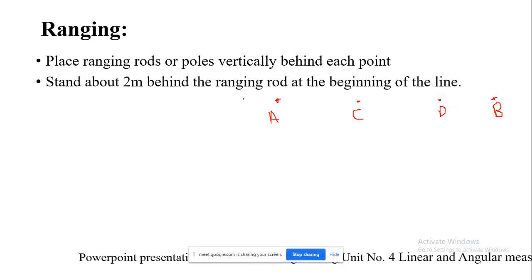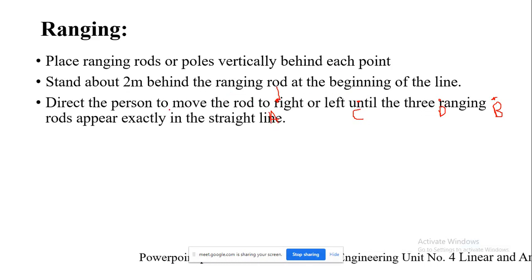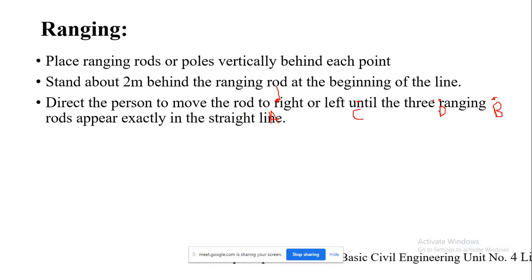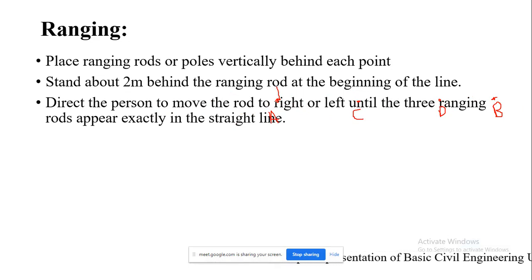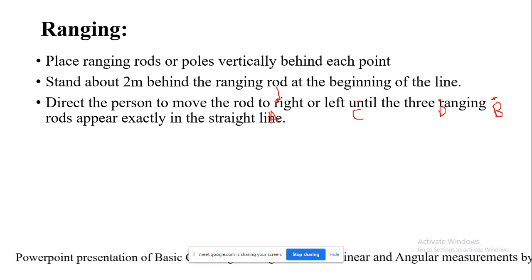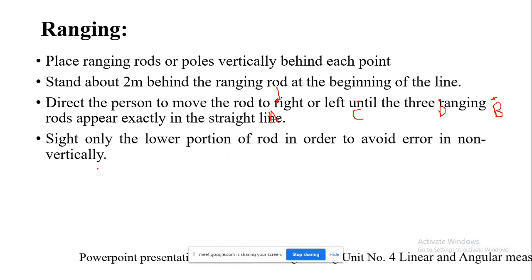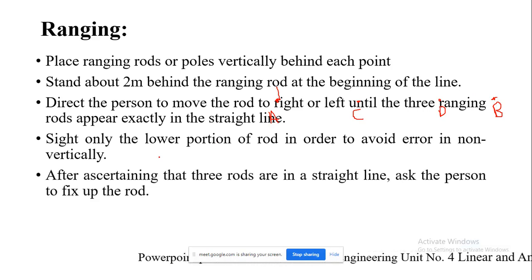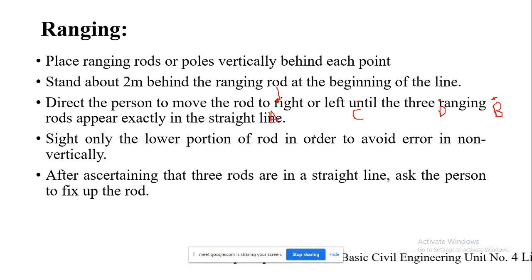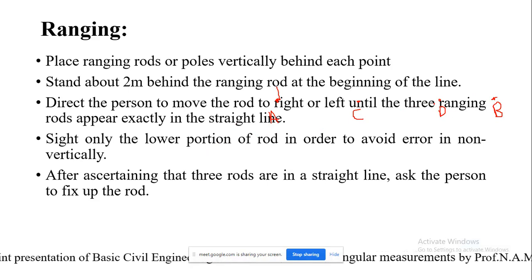The person standing at A places the ranging rod there and stands behind it at the beginning of the line. He directs the intermediate person to move the rod to the right or left until all three ranging rods appear exactly in a straight line. He continues giving directions until A, B, and C are in a straight line. You should sight only the lower portion of the rod to avoid error due to non-verticality. After confirming all three rods are in a straight line, the person at C fixes the rod and the same procedure is carried out for marking intermediate point D.